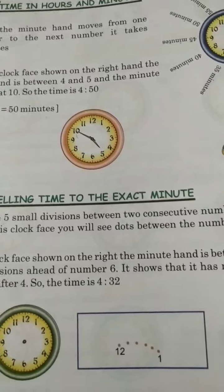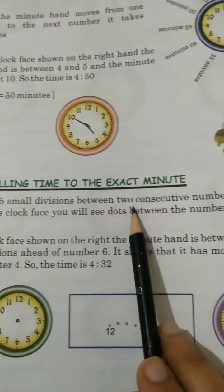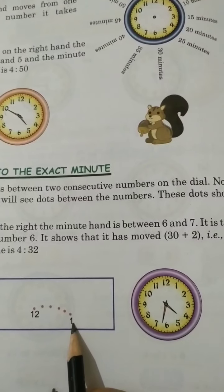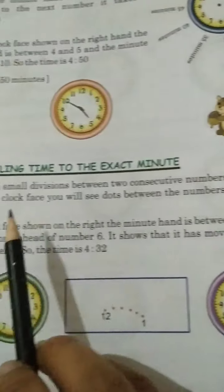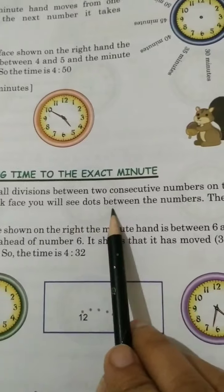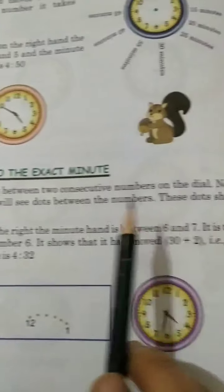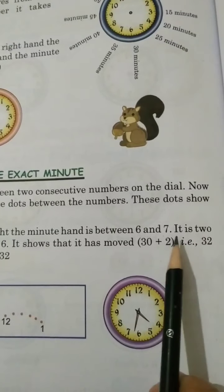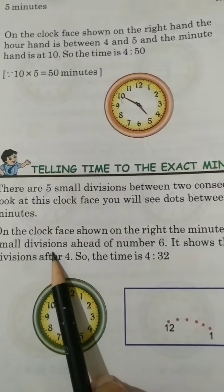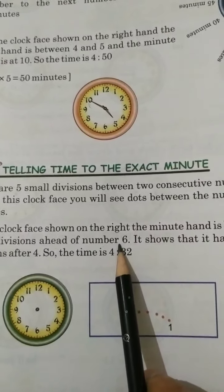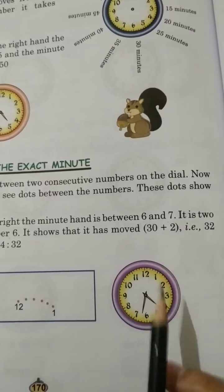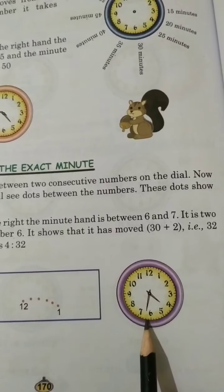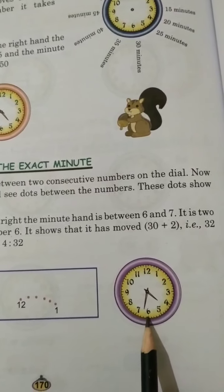Now, telling time to the exact minute. There are five small divisions between two consecutive numbers on the dial. You will see dots between the numbers — these dots show minutes. On the clock shown, the minute hand is between 6 and 7, two small divisions ahead of number 6. It has moved 30 minutes already, plus 2 more divisions, so that is 30 plus 2 equals 32 minutes. The time is 4:32.